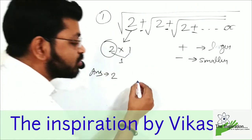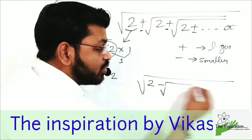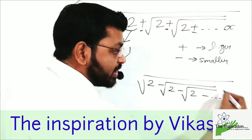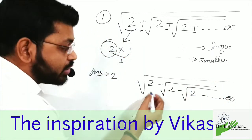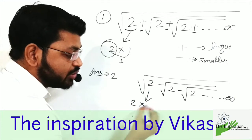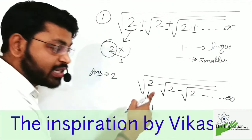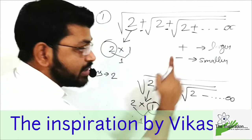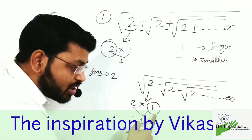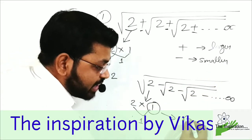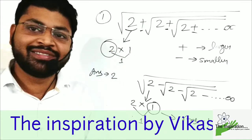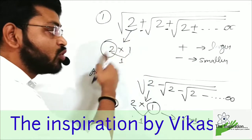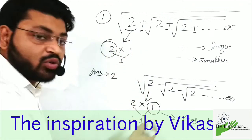If we look at it, we must factorize 2 as 2×1. For √(2×√(2×√(2×...))) — if we look at this question, we define the factorization. Here, minus means smaller, so the answer will be 1.